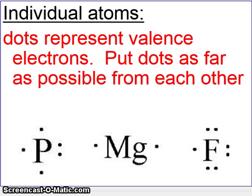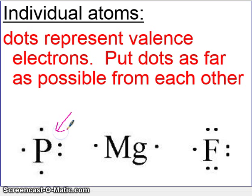First of all, let's identify the simplest version of this, and that is drawing the Lewis structures of individual atoms. This is pretty simple — you write the atomic symbol and then you put dots around the atom.